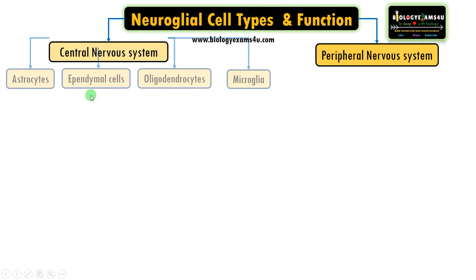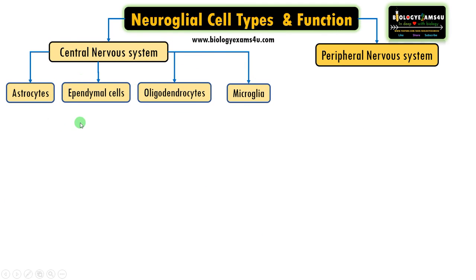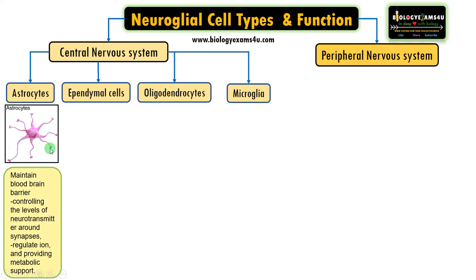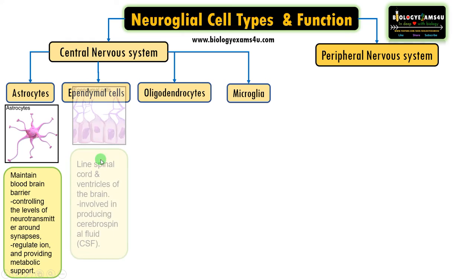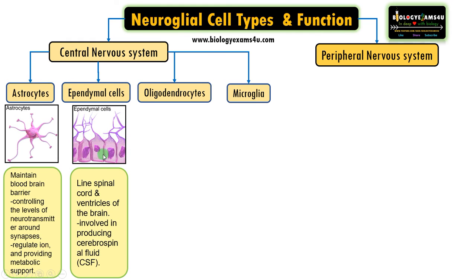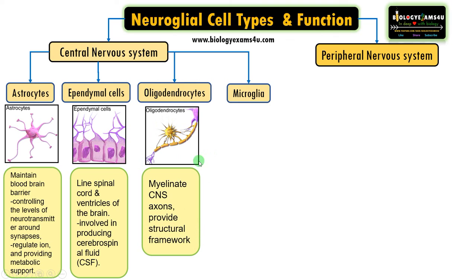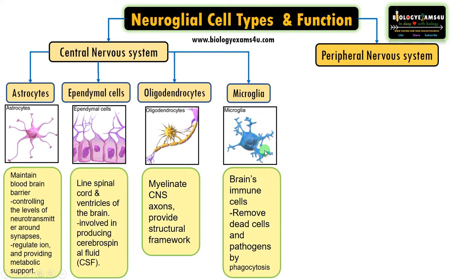In the central nervous system there are astrocytes, ependymal cells, oligodendrocytes, and microglial cells. Astrocytes are so called because of their star-shaped structure; they maintain the blood-brain barrier, control neurotransmitter levels around synapses, regulate ionic levels, and provide metabolic support. Ependymal cells line the spinal cord and ventricles of the brain and are involved in producing cerebrospinal fluid. Oligodendrocytes myelinate central nervous system axons and provide the structural framework. Microglial cells are the brain's immune cells — they remove dead cells and pathogens by phagocytosis, similar to macrophages in the immune system.